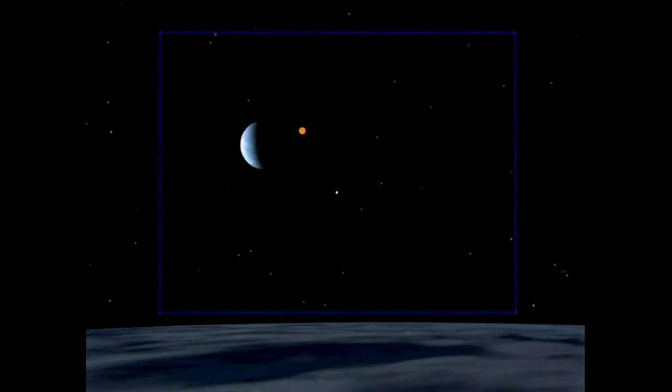On nights of conjunction, you can see Mars, a little more yellow than the stars, just next to the Moon.